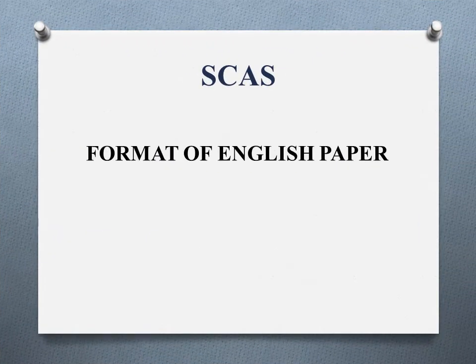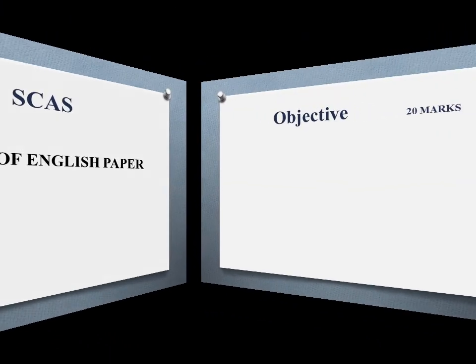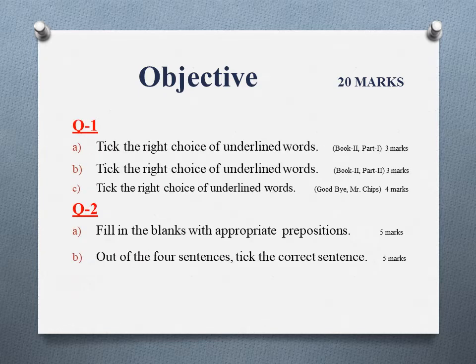Now I will discuss with you the format of your English paper so that you can get a better understanding of your subject. The English paper is divided into two parts: objective and subjective. The total marks of the paper are 100. The objective section will be of 20 marks. In the objective paper, you will be asked two questions. Question number one, in which you will be given options A, B, and C, and here you have to choose the right synonyms.